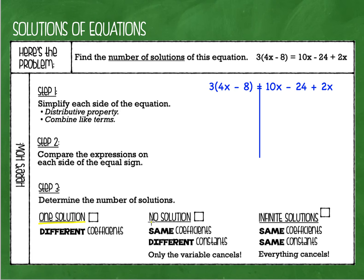But it is possible for an equation to have no solution at all or to have infinite solutions. One solution means that there is one and only one answer that would make the equation true. Like if you have x plus 1 equals 4, then x has to be 3 — it can't be anything other than 3. No solution means that there is no possible solution; there is no value of x that you could ever come up with that would make both sides of an equation equal the same number.